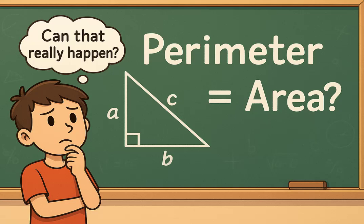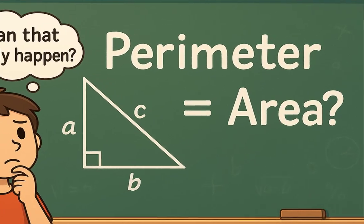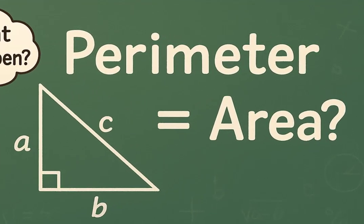Have you ever wondered if there exists a right-angled triangle with whole number sides such that the perimeter is exactly equal to the area?